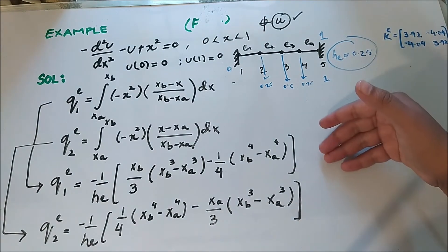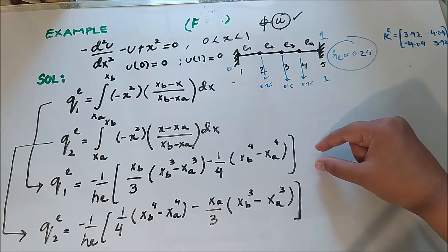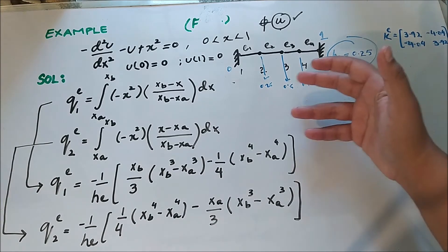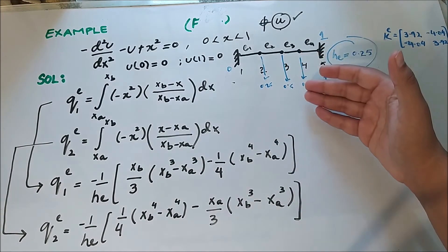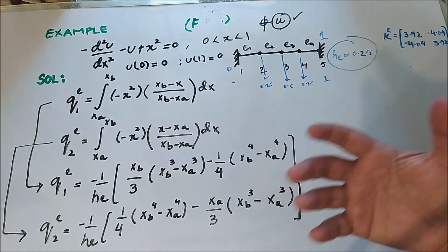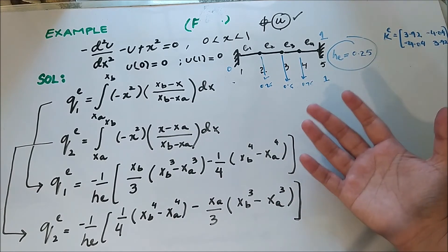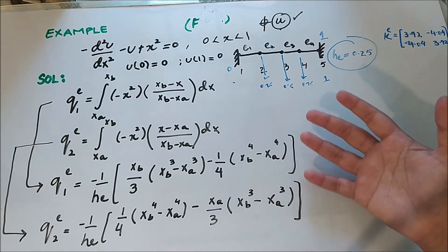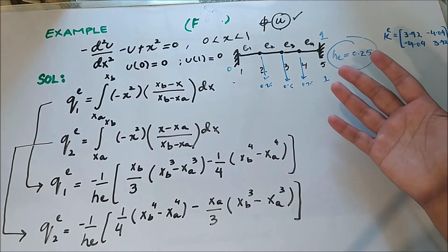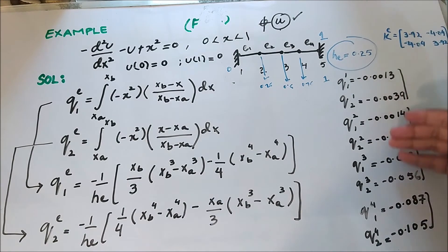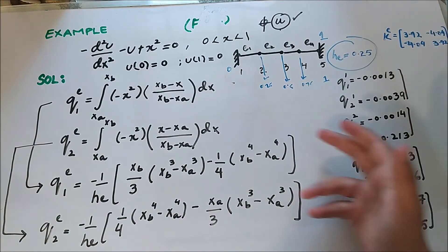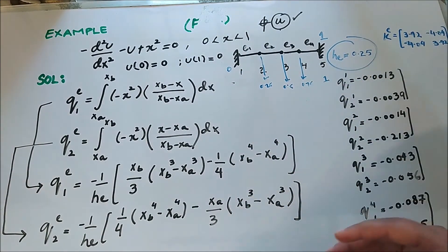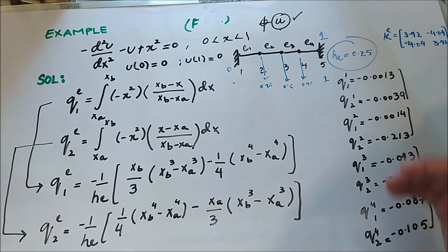I'll write out the force values obtained after plugging x_a and x_b for each element. You can solve these at your end to verify you get the same discrete force values at the ends of each element. These are the forces at each end for each element. We now have the stiffness matrix and the forces.